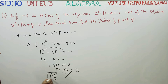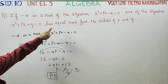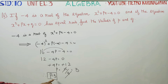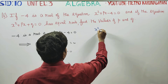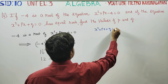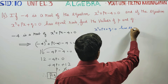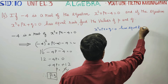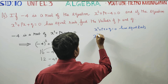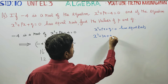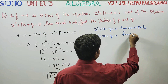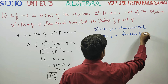Now, using p equals 3, the equation becomes x squared plus 3x plus q equals 0, and this equation has equal roots.